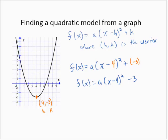So we just want to find another nice point on the curve. And this point looks like it'll work: 6, negative 1.